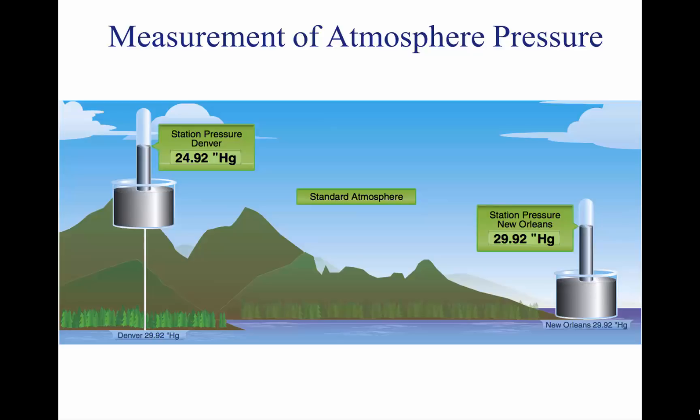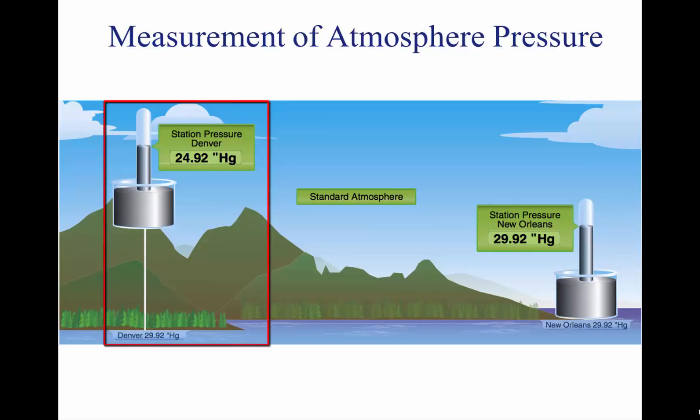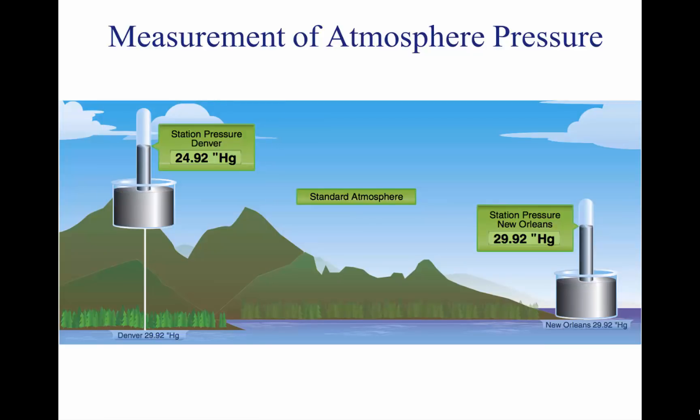For example, a station at 5,000 feet above sea level with a reading of 24.92 inches of mercury reports a sea level pressure reading of 29.92 inches of mercury. Using common sea level pressure readings helps ensure aircraft altimeters are set correctly based on the current pressure readings.